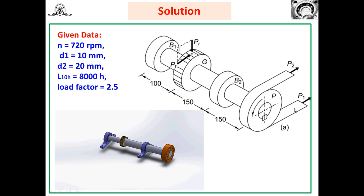The tight side tension P1 and slack side tension P2 are shown. The distance between bearing B1 and gear G is 100 mm. The distance between gear G and bearing B2 is 150 mm, and from bearing B2 to the pulley is also 150 mm.